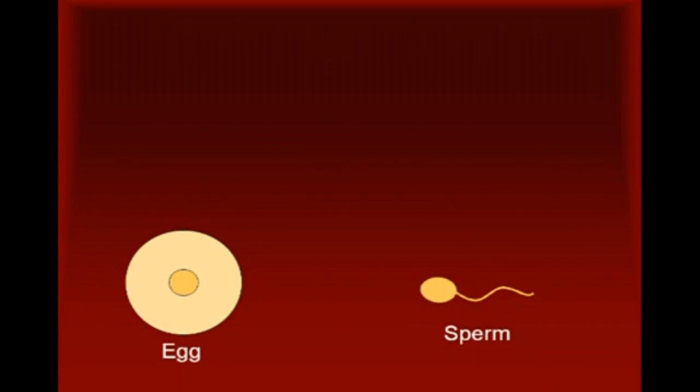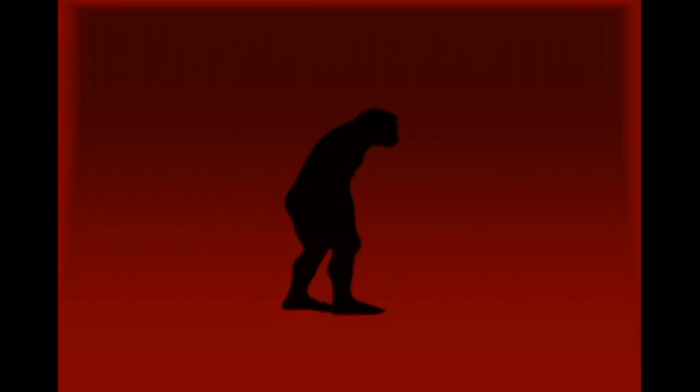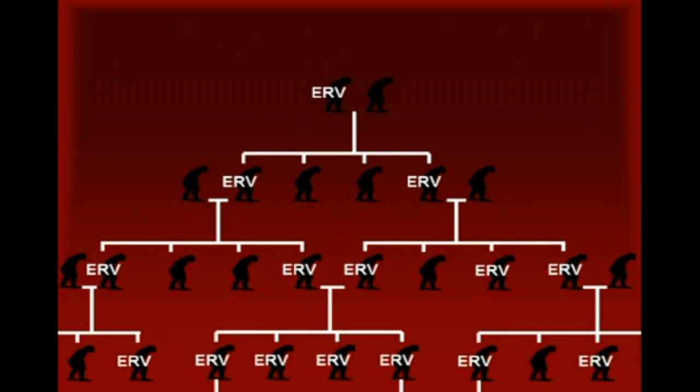If a retrovirus infects a germline cell — those cells that produce sperm and egg — then every cell in the resulting offspring will contain the retroviral DNA sequence within it. Once inserted into a host genome, ERVs may continue to replicate and evolve, or they may become inactivated by mutations during the replication process. Therefore, under the right conditions, retroviral infections of a germline cell can make a detectable mark on the genome of the resulting offspring. Once this mark becomes fossilized in the genome, it will be passed down to all future descendants.